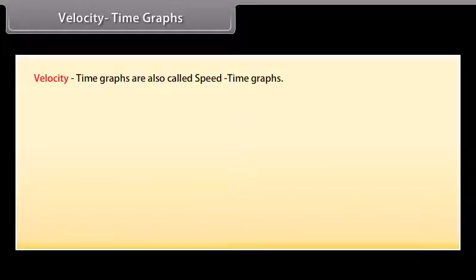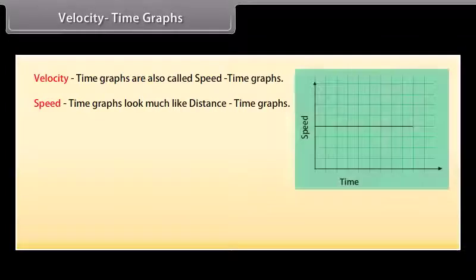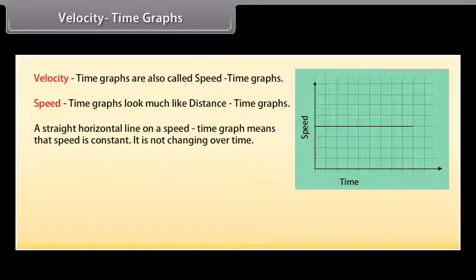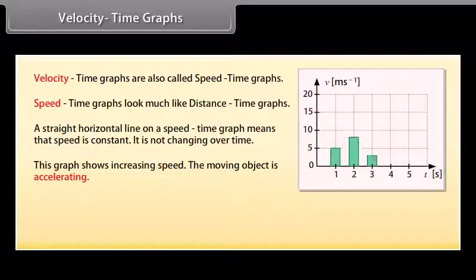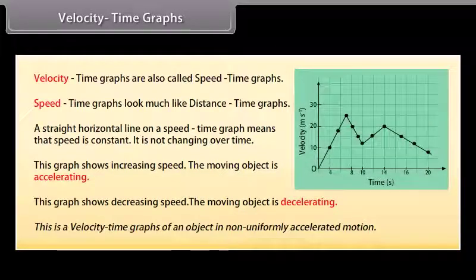Velocity-time graphs are also called speed-time graphs. Speed-time graphs look much like distance-time graphs. Time is plotted on the x-axis; speed or velocity is plotted on the y-axis. A straight horizontal line on a speed-time graph means that speed is constant. An upward sloping line shows increasing speed — the object is accelerating. A downward sloping line shows decreasing speed — the object is decelerating. A curve on a velocity-time graph represents non-uniformly accelerated motion.